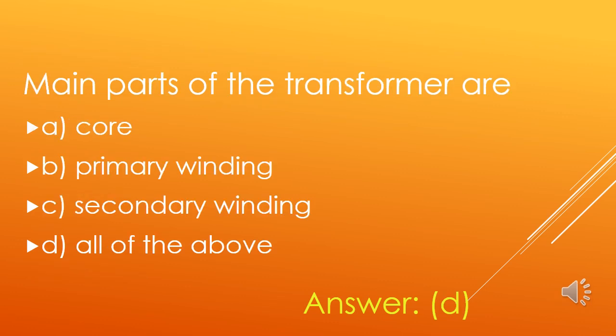Main parts of the transformer are: A. Core, B. Primary winding, C. Secondary winding, D. All of the above. The main parts of the transformer are primary winding, secondary winding, and core. So, option D is the right answer.